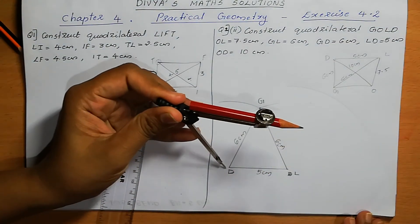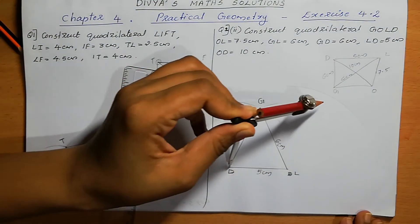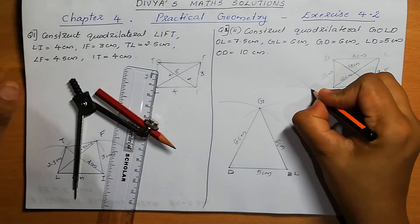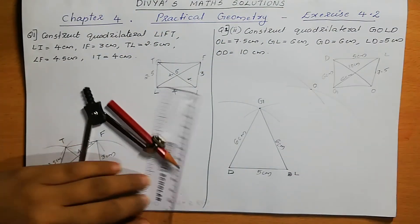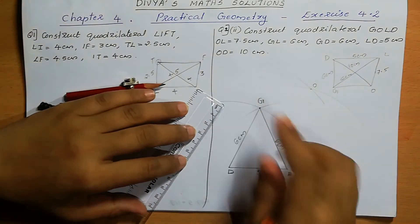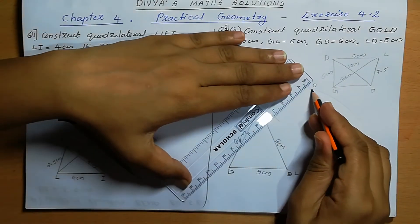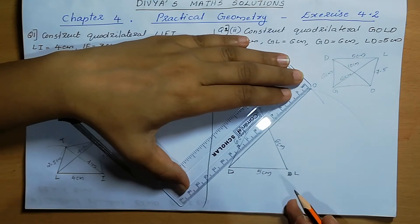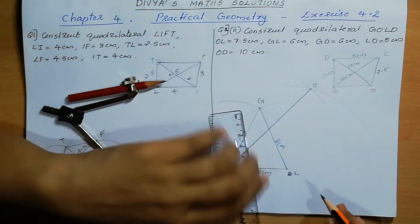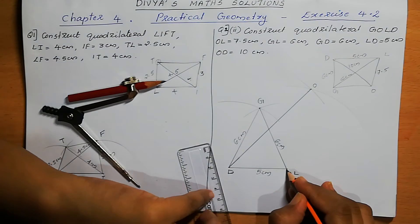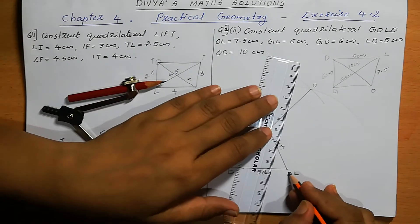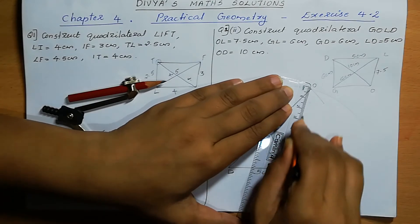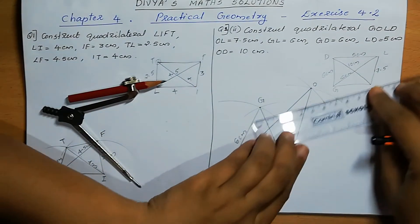We take 10 cm and draw an arc from D to find point O. Now we got point O. OD is 10 cm — we can join and verify: this is 10 cm. Correct. Next, LO — OL is 7.5 cm. Correct, that is also correct: 7.5 cm.